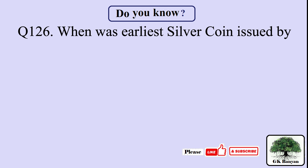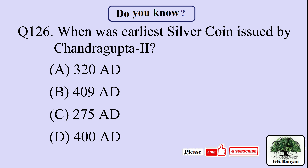Question 126. When was the earliest silver coin issued by Chandragupta the Second? Your options are: A. 320 AD, B. 409 AD, C. 275 AD, D. 400 AD.